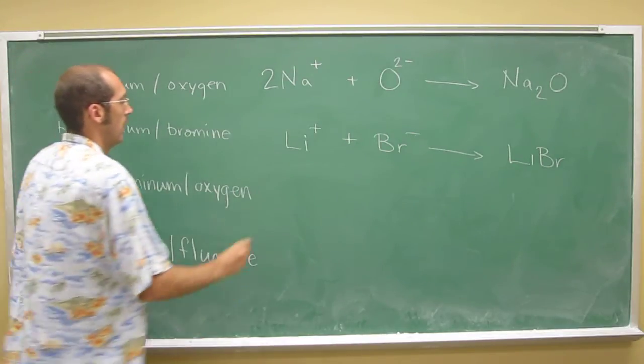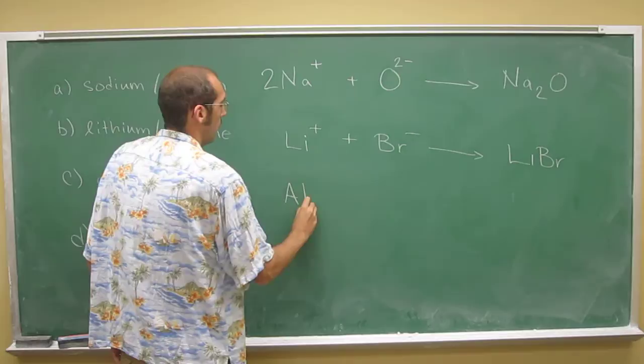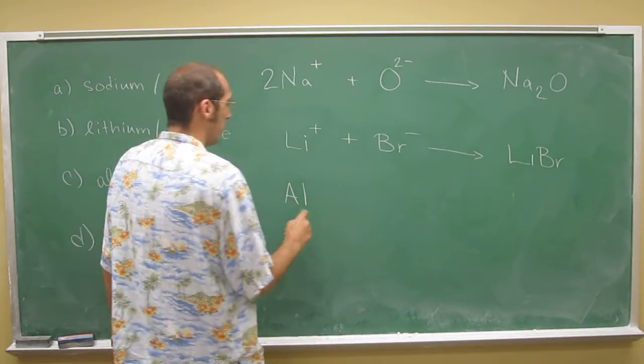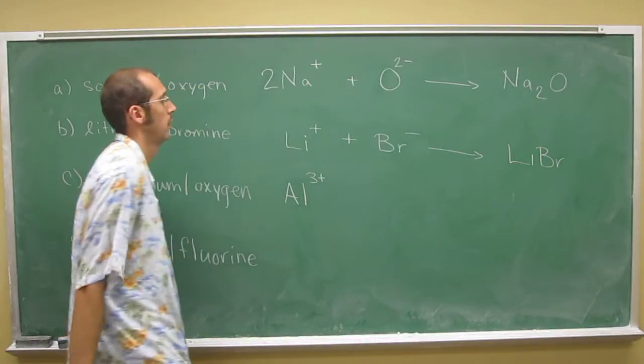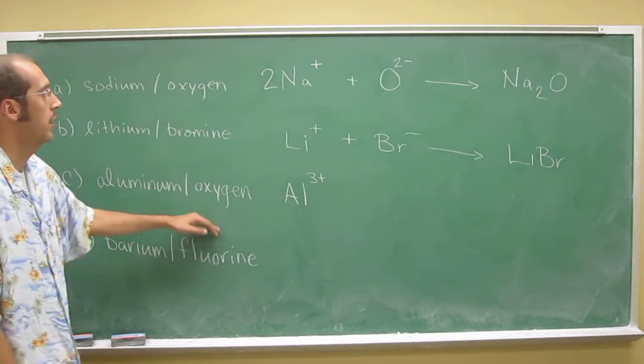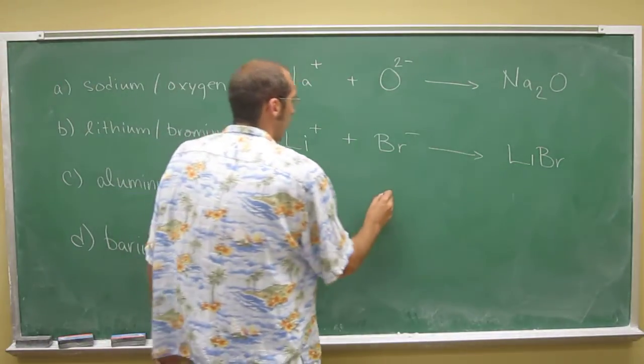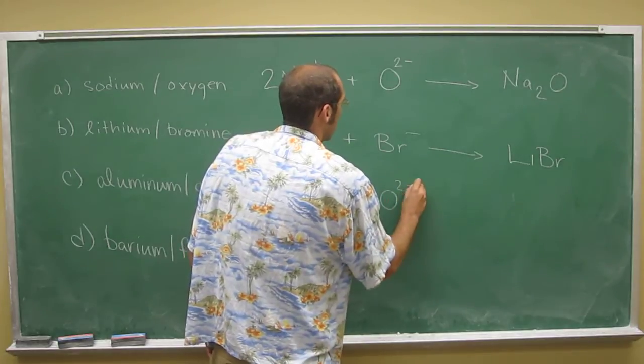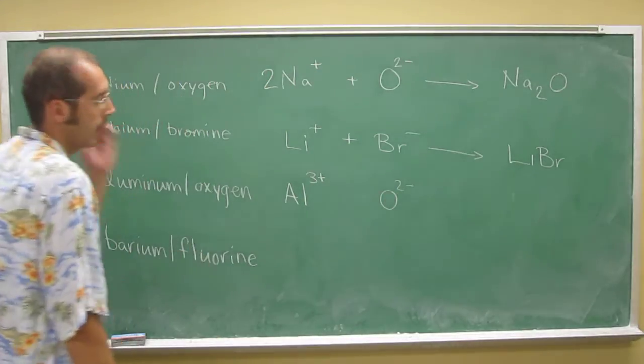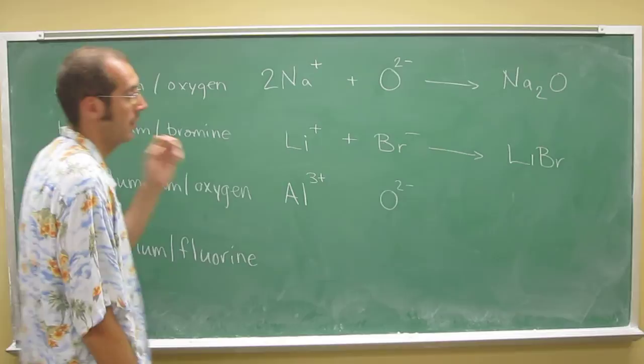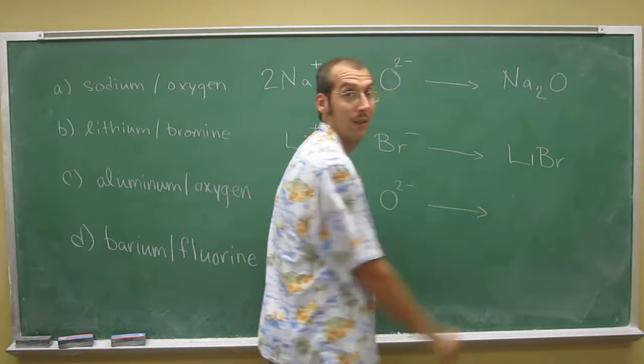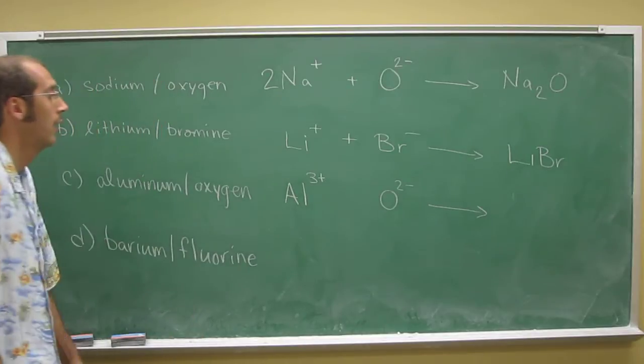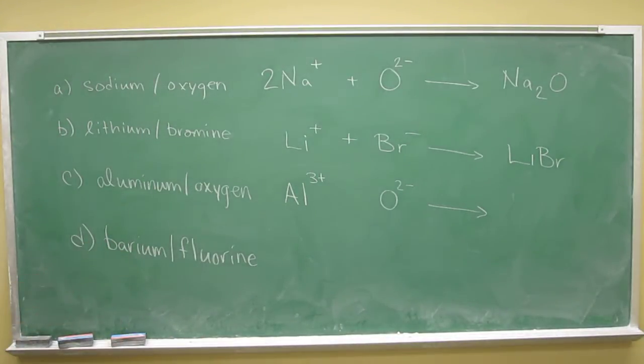Aluminum prefers to have a plus 3 charge. And oxygen, we already know from the one before, prefers to have a minus 2 charge. So if we do plus 3 minus 2, that's going to give us over here plus 1. So that's not going to work. So we've got to figure out some sort of number that these things have in common, 2 and 3.